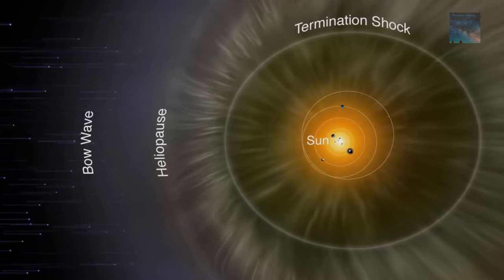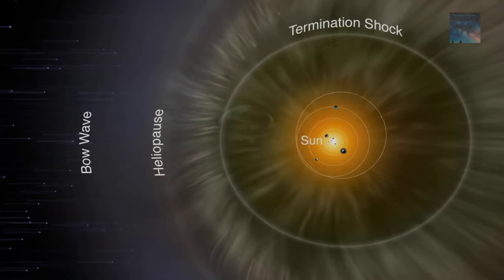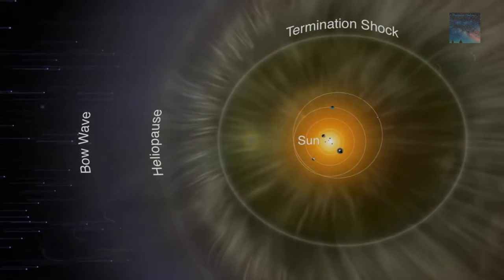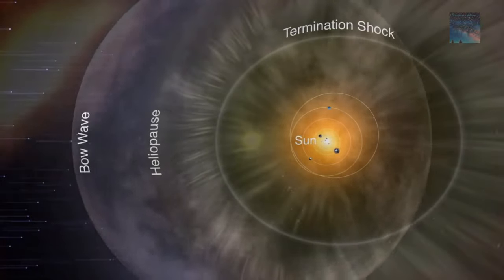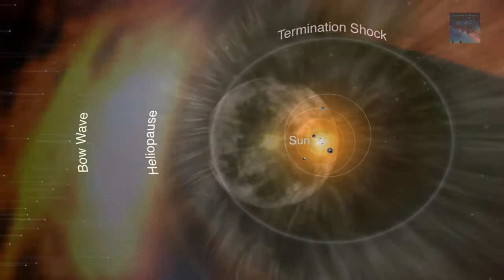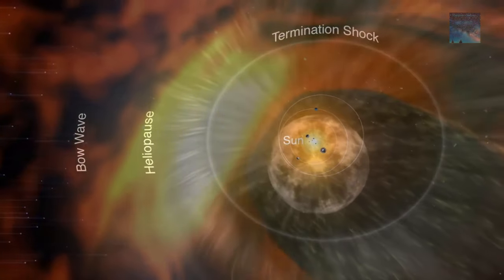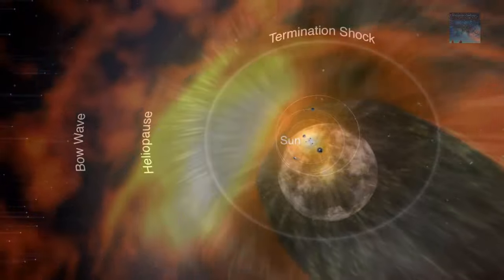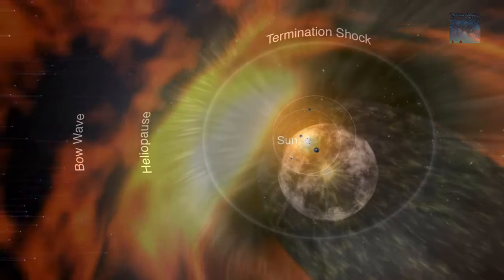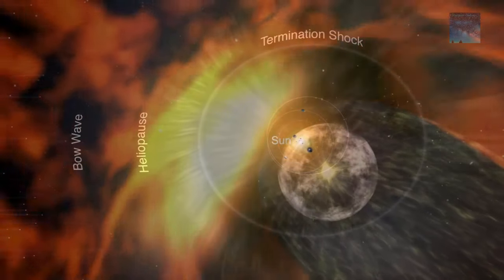But the simulation didn't stop there. It also revealed that the 2014 solar wind pressure increase would, over time, continue to blow up the heliosphere even further. Three years after the solar wind pressure increase, the termination shock, the inner bubble within the heliosphere, should expand by seven astronomical units, or seven times the distance from Earth to the Sun.